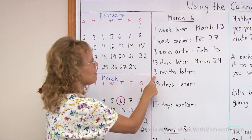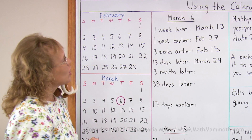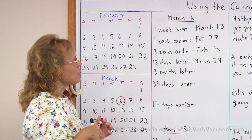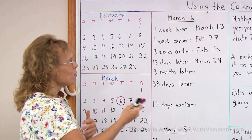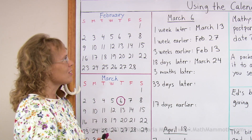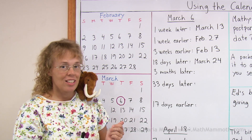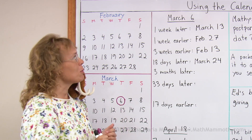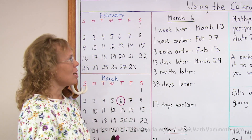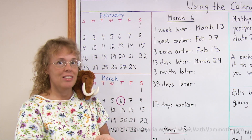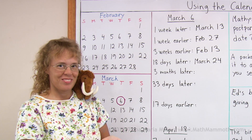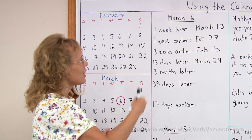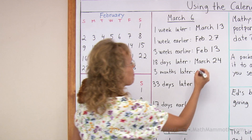Three months later. This time you can count the months. We are in March, and then count three months forward — you would have April, May, and June. So three months later is June 6th.